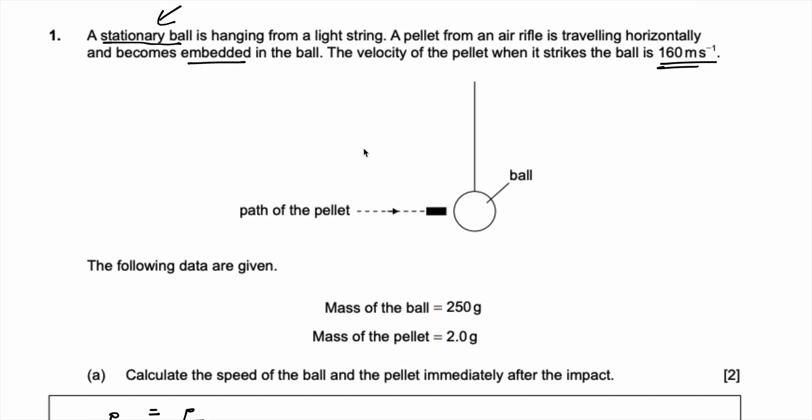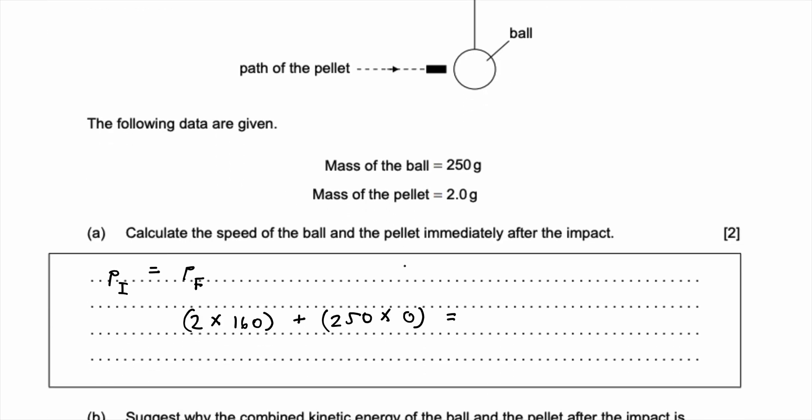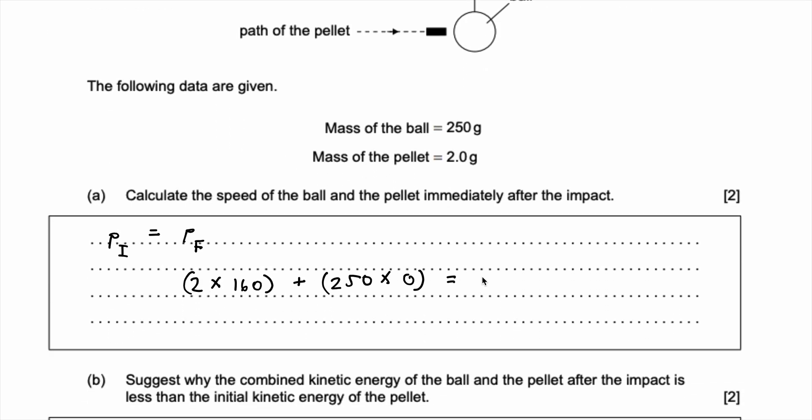And now we need to do the momentum after the collision. So what it says is that the ball becomes embedded with the pellet, meaning their masses must add. So it's 250 plus 2, it becomes one single entity. So the momentum afterwards would be 250 plus 2 times by the velocities together because they're one single entity. So that's the V I want to calculate.